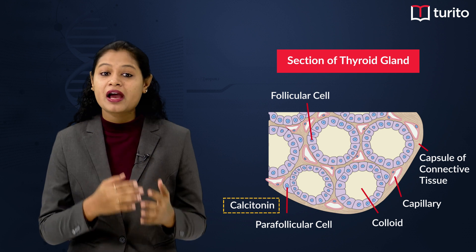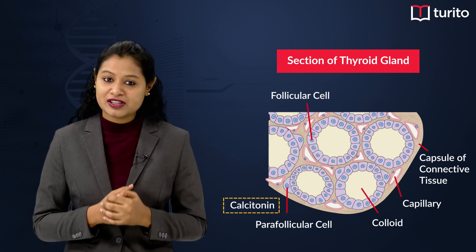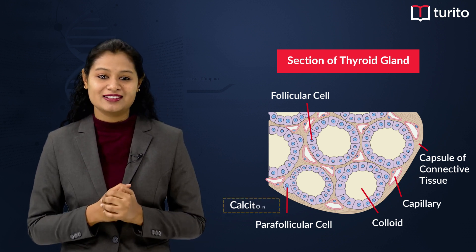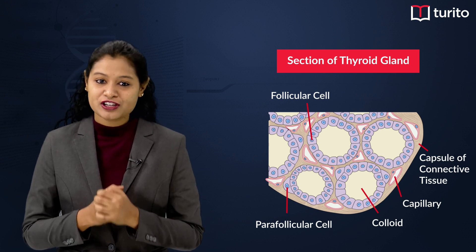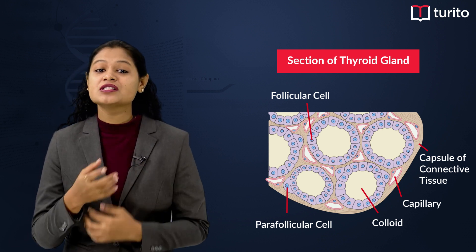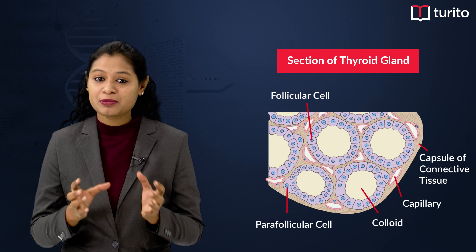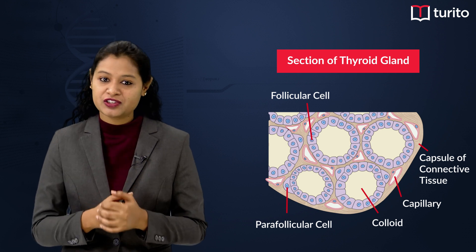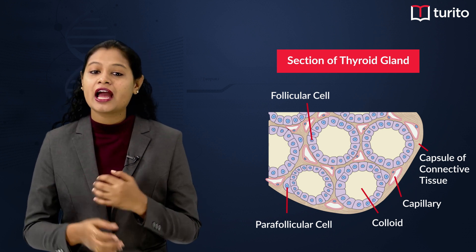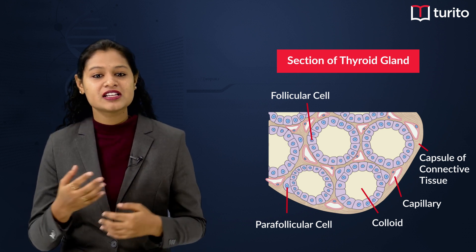Calcitonin has an antagonistic effect to the parathyroid hormone released by the parathyroid gland. One unique function of the thyroid gland is that it stores its secretion in the semi-fluid material of the follicular cells, and whenever it is required, it is released into the blood.